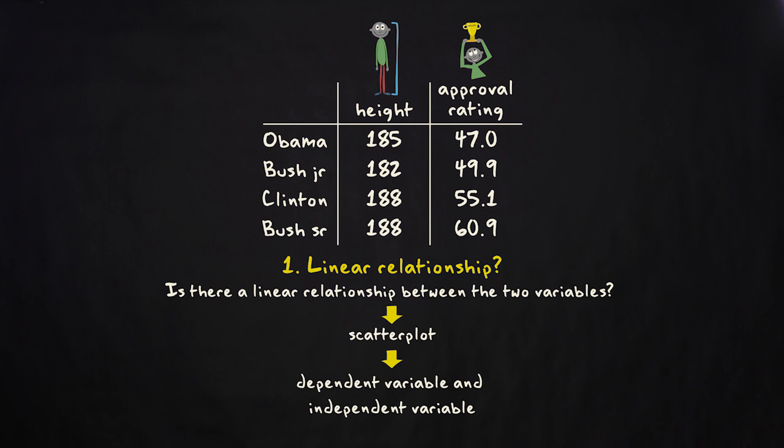In this case, it's more likely that the leader's physical height influences his or her approval ratings than that approval ratings affect a leader's height. After all, it would be silly to expect the leader to become taller once his or her approval ratings get better.